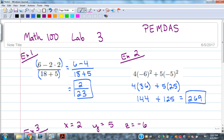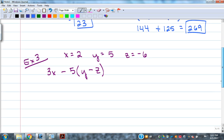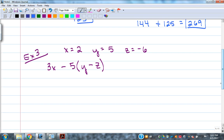Last example: we have an evaluation problem where we were given a problem that has x's, y's, and z's - variables involved. We're asked to work it out given that x is equal to 2, y is equal to 5, and z is equal to negative 6. So we're going to plug those in in the place of each variable.